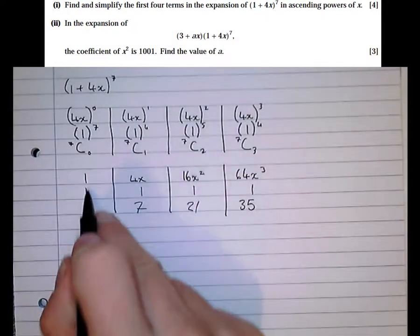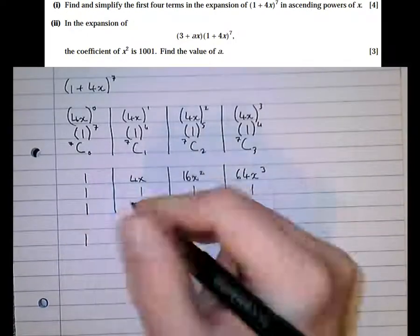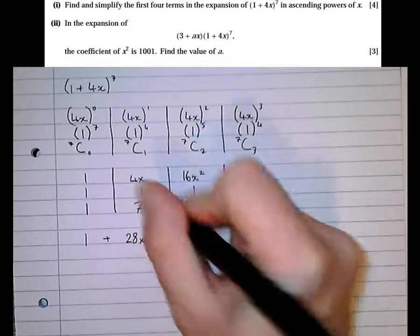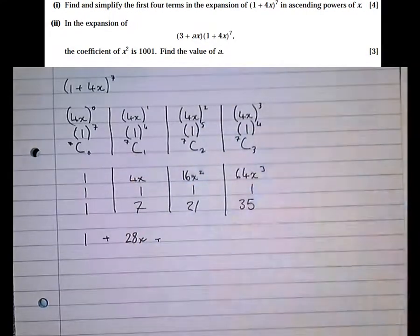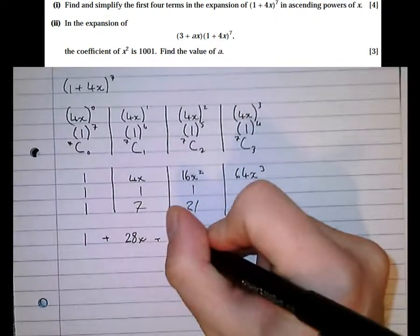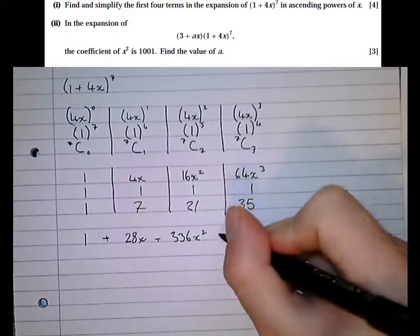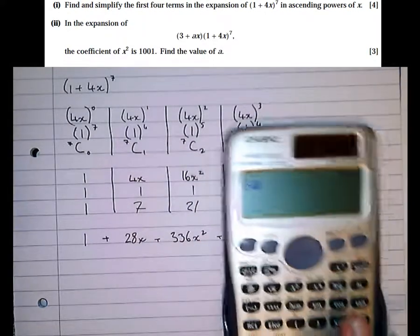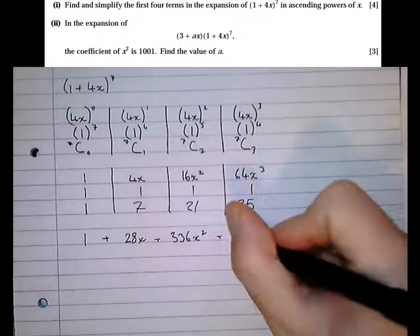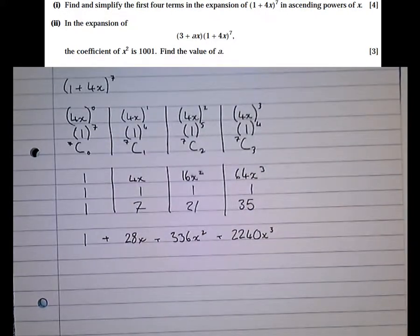Finally, we need to multiply the entries in each column together. 1 times 1 times 1 is 1, plus 4 times 1 times 7 is 28x, plus 16 times 21 is 336x squared. And finally, 64 times 35 is 2240x cubed. And that's that first part done.